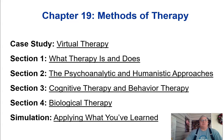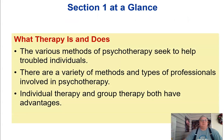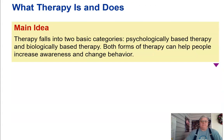Welcome to Psychology. This is Methods of Therapy, Chapter 19, Section 1. The various methods of psychotherapy seek to help troubled individuals. There are a variety of methods and types of professionals involved. Individual therapy and group therapy both have advantages. Therapy falls into two basic categories: psychological-based therapy and biological-based therapy. Both forms can help increase awareness and change behavior.